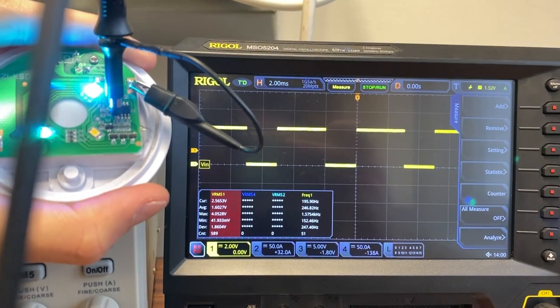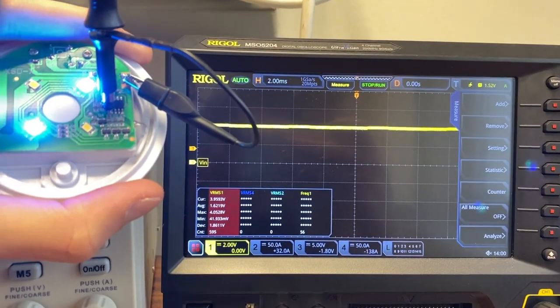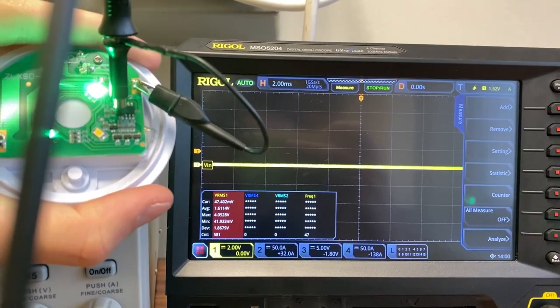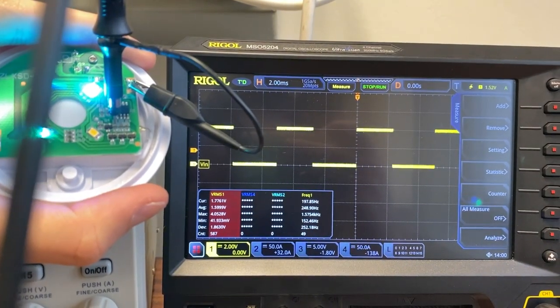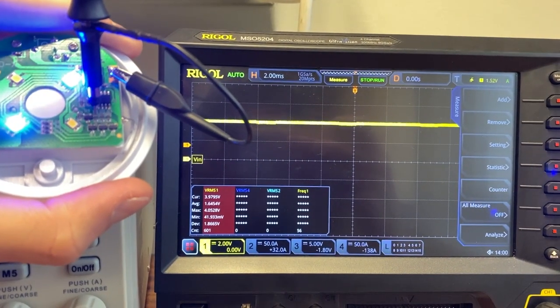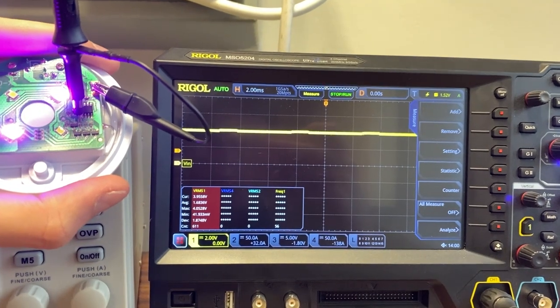But situation with RGB diodes is very different. For example, now I am measuring signal at the base of transistor, which controls blue diode. As you can see, PWM signal duty cycle changes. It increases from 0% to 100%.